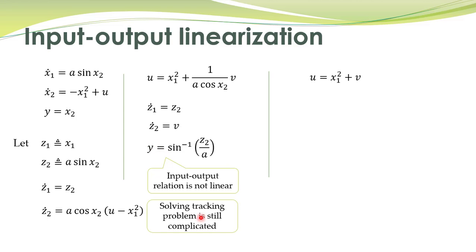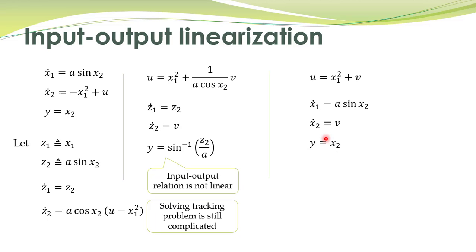What we can do is take a different control law for this system such that the input-output relation becomes linear. With this control input, x1² cancels out and the input-output relation is a linear relationship. This kind of linearization is called input-output linearization: although there are nonlinearities in the state equations, the input-output relation is linear.